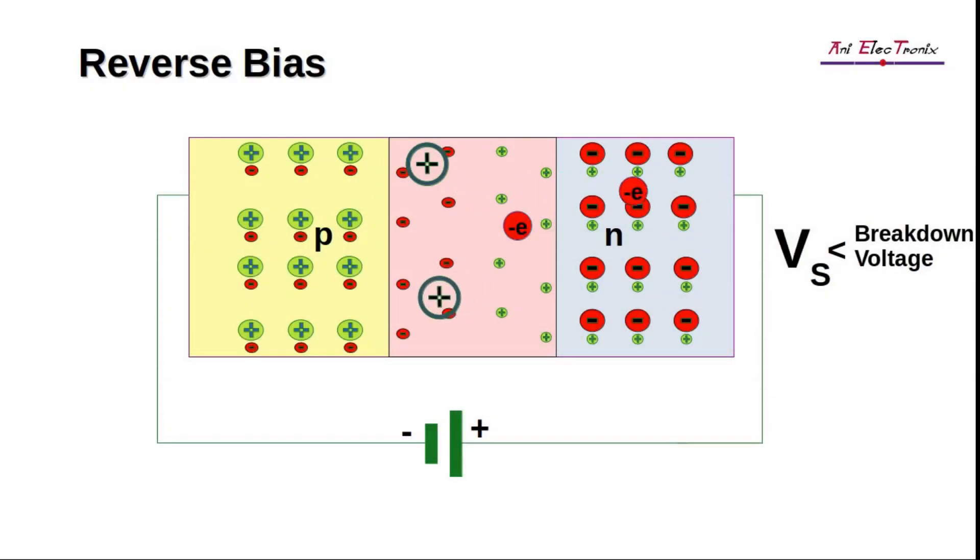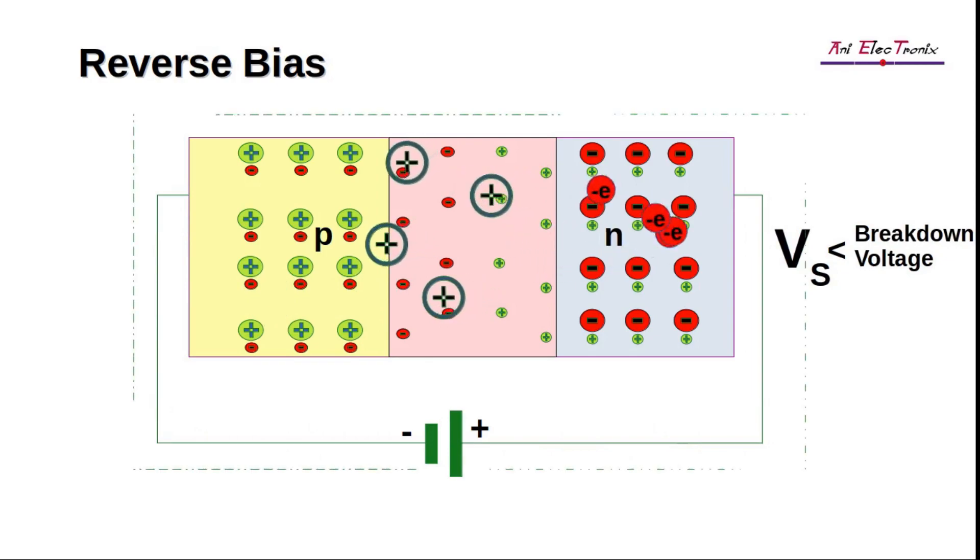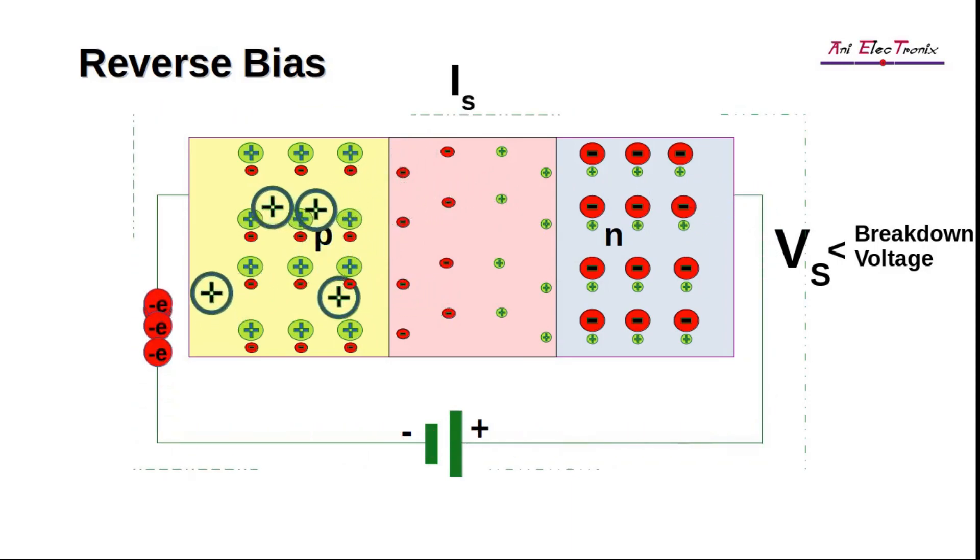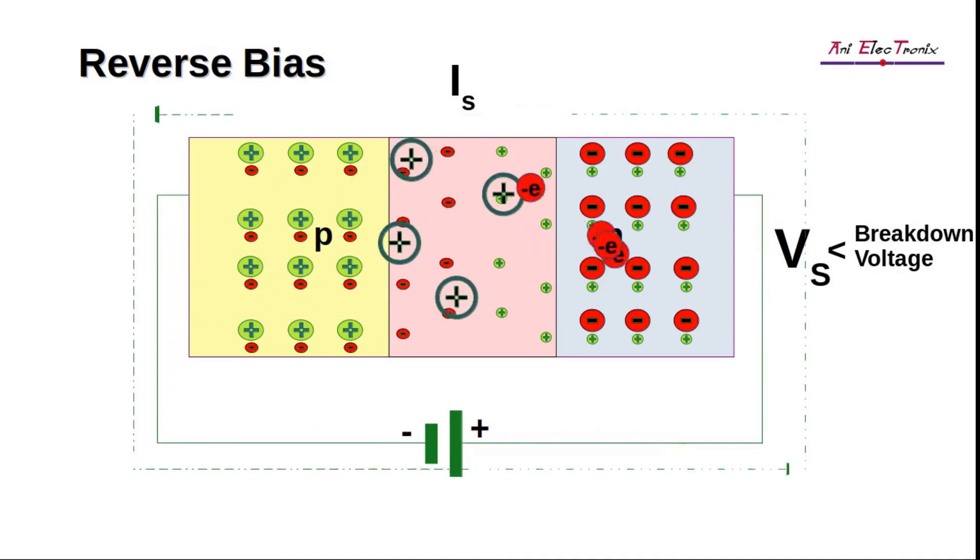According to our learning, the minority charge carriers pass through the N and P regions and are the cause of reverse saturation current. As a result, the N and P regions act as parallel metal plates or conductors. Therefore, we can conclude that the depletion region contains a capacitance.